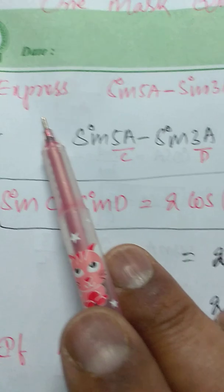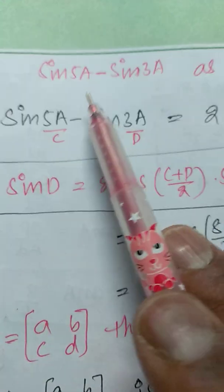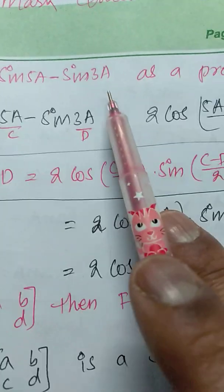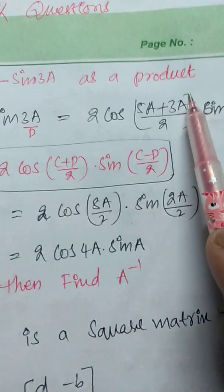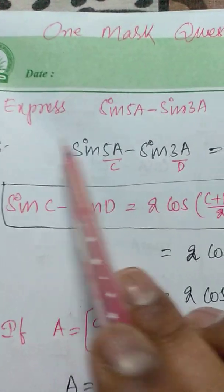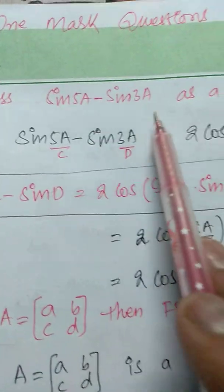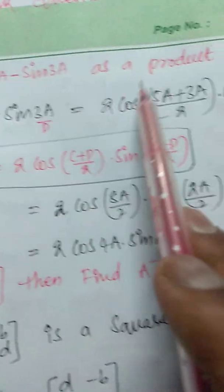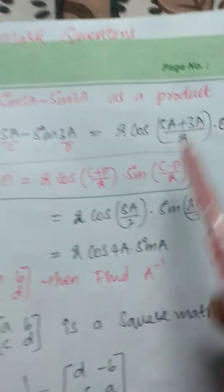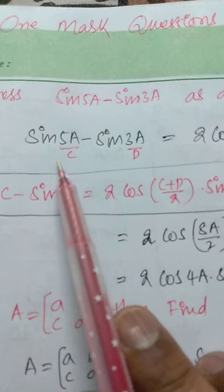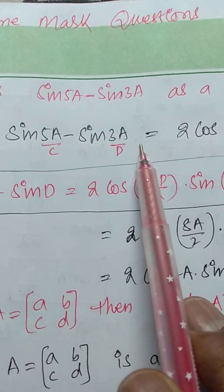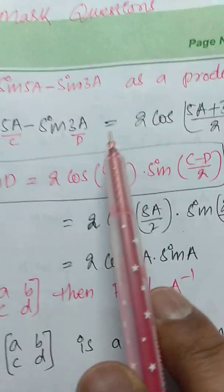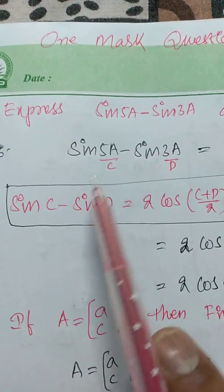Question number one: express sin 5a minus sin 3a as a product. Write the given value: sin 5a minus sin 3a. It is in the form of sin C minus sin D.